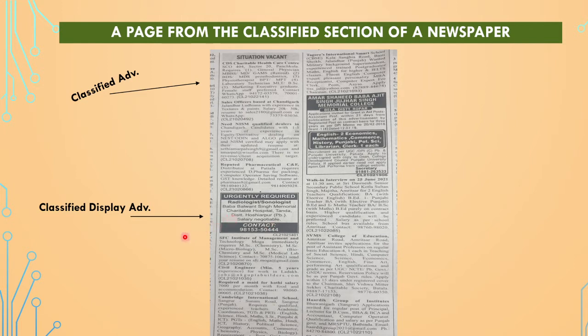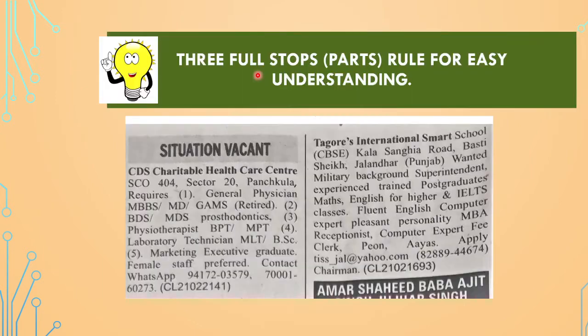These are simple text ads and this is a classified display advertisement — you should know the difference. Because in a question, if it is written 'draft a classified display advertisement,' then something bold and larger is required. And if it is simply written 'draft a classified advertisement,' then a simple text ad is required. So that is clear, now let's move ahead.